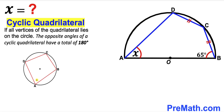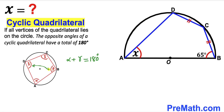If I label the angles as alpha, beta, gamma, and delta, then the sum of opposite angles alpha plus gamma must equal 180 degrees, and beta plus delta must equal 180 degrees as well.